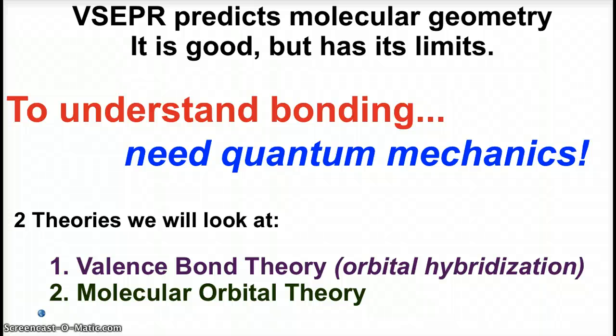VSEPR does a very nice job predicting molecular geometry, but it does have its limits. If we're going to understand bonding, we need to investigate a little more into quantum mechanics. The two theories we look at: one is valence bond theory, where we've already talked about orbital hybridization, and what we're going to look at today is molecular orbital theory.